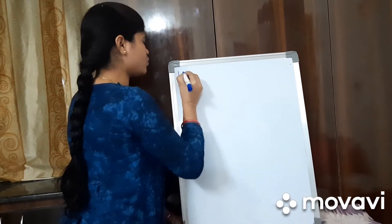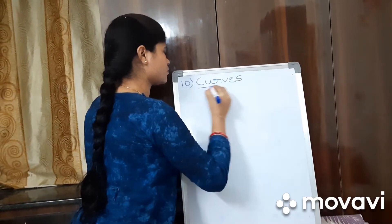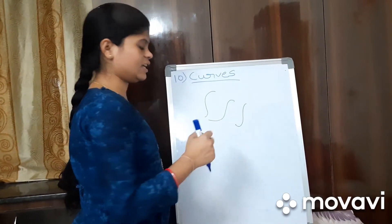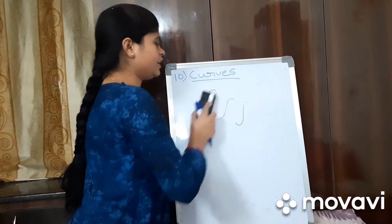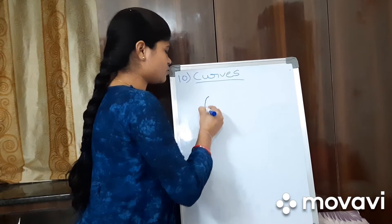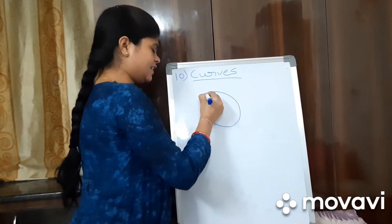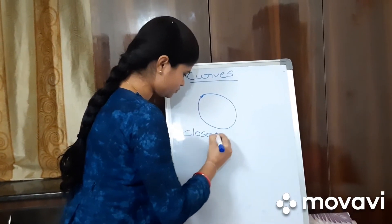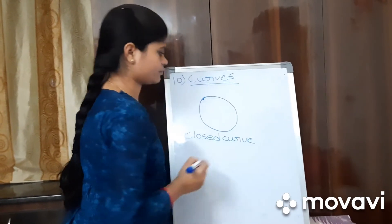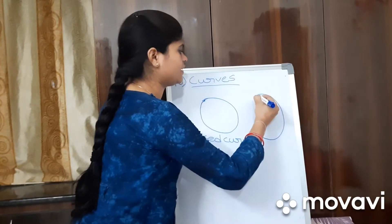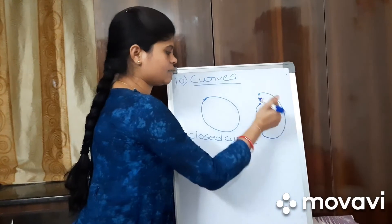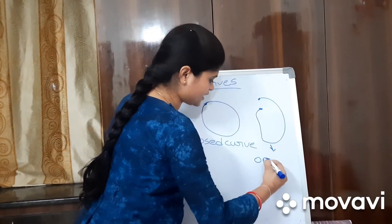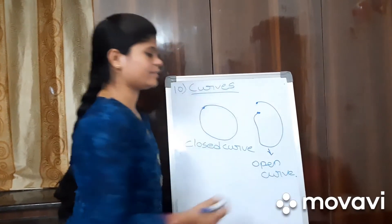Next we will learn about curves. What is a curve? A curve is a diagram which is not in a straight line. In curves we have closed curves and open curves. This is a circle — the starting point and ending point of the curve are at the same point, so this is called a closed curve. If the starting point and ending point of a curve are not the same, that is called an open curve.